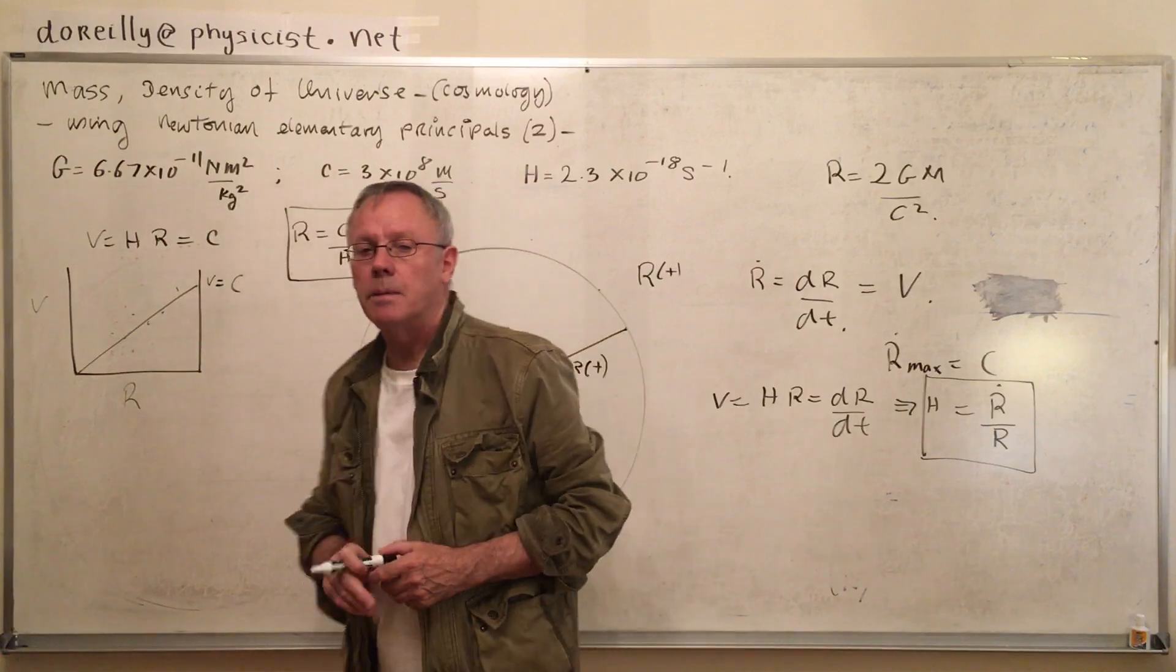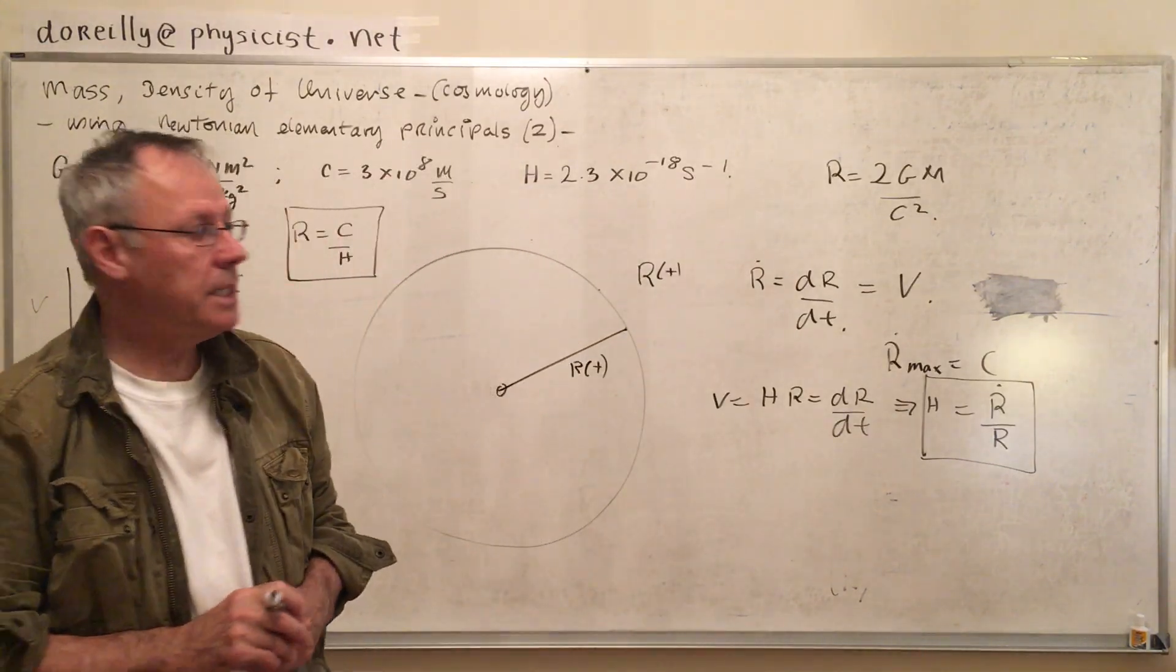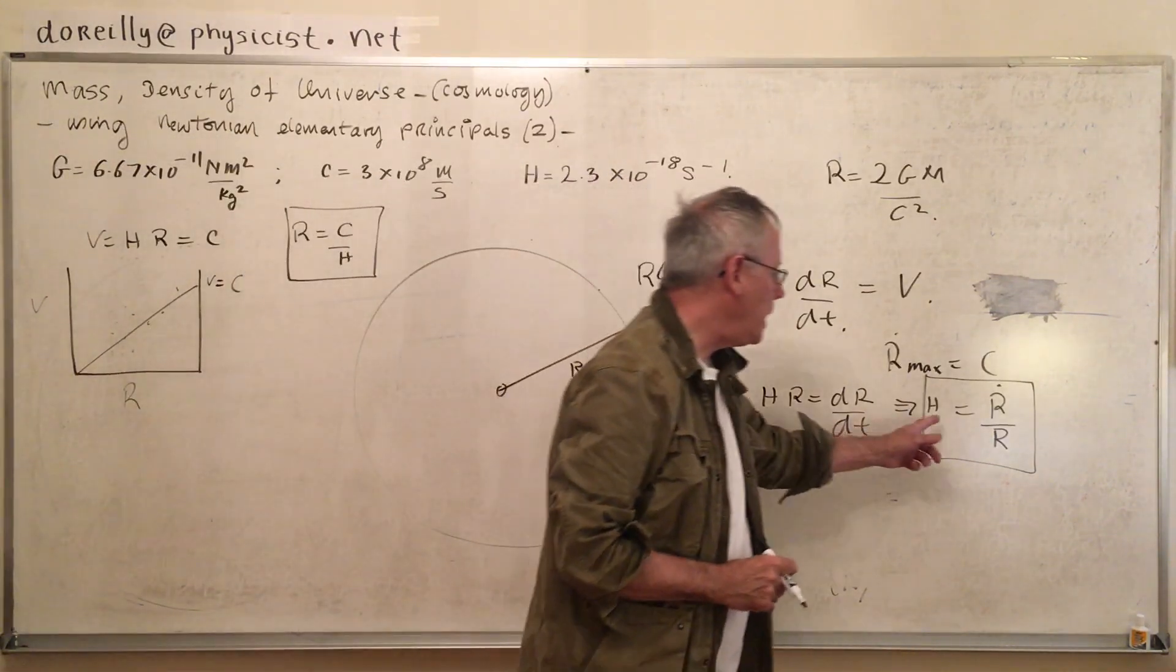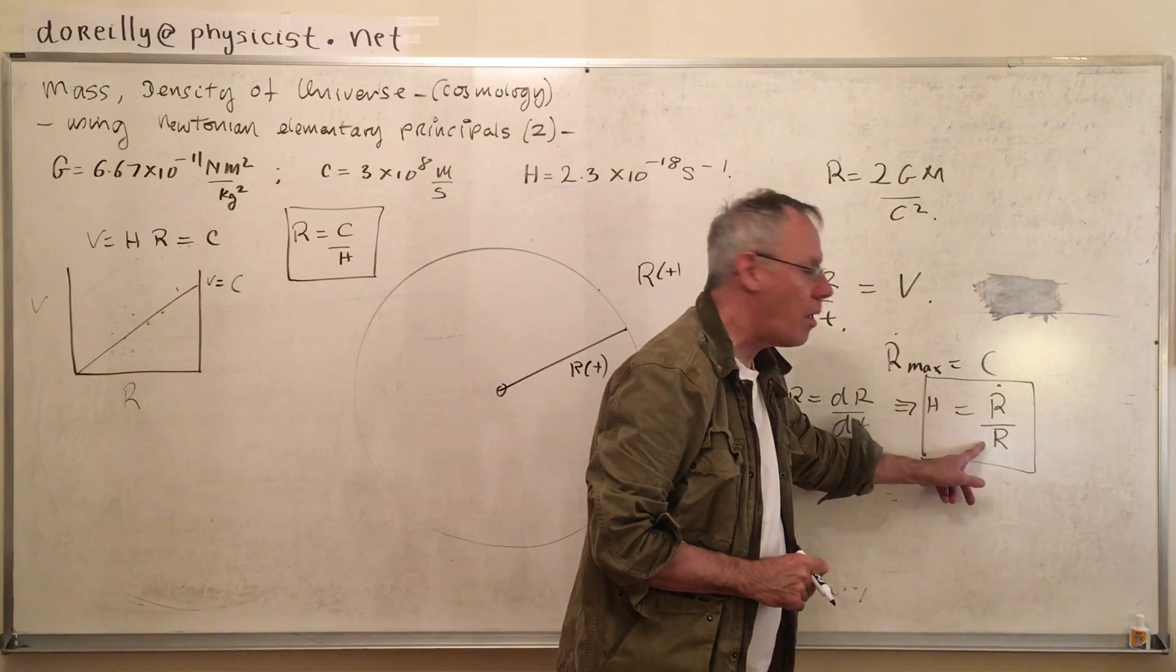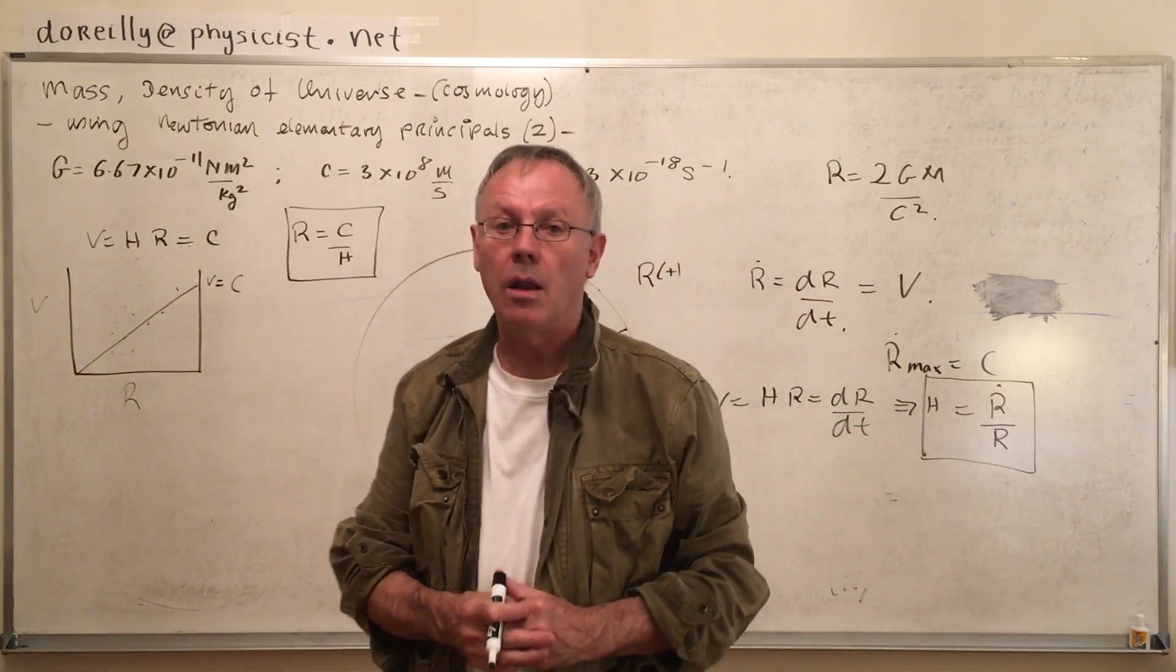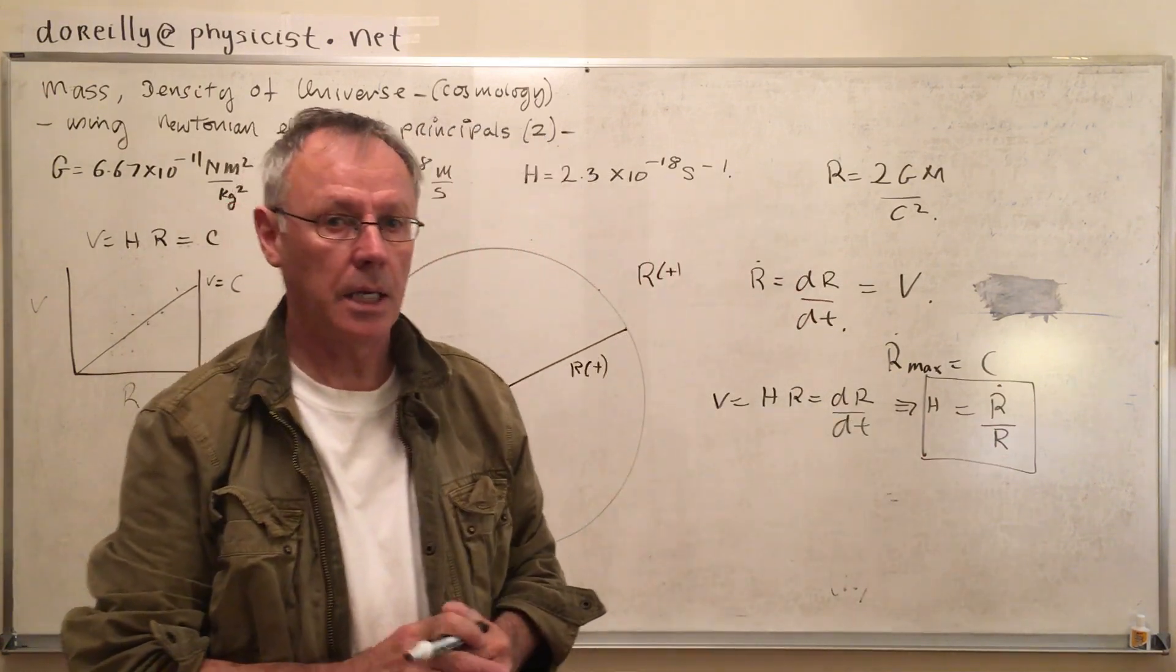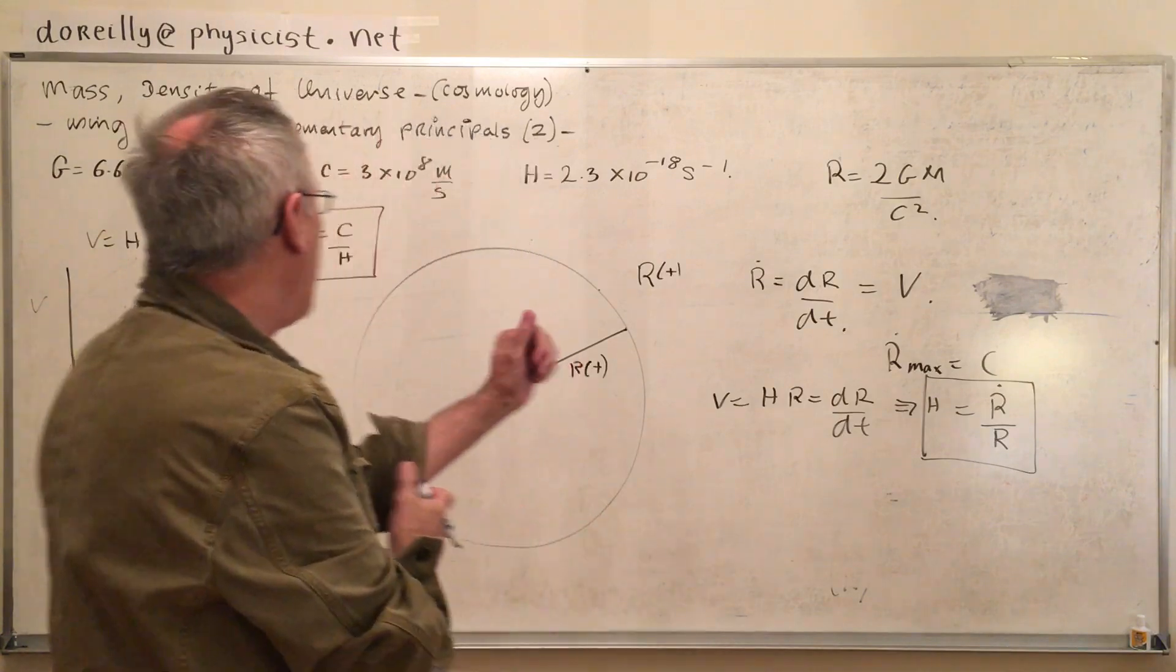Now, we worked out the radius of the universe as well yesterday. But let's look at this. H is not really a constant. It's a particular value right now, but it's dynamical. H will have the expression Ṙ/R. If you want to integrate that, you get a log. We'll carry out that calculation another day.